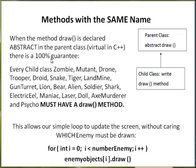Methods with the same name: when the method draw is declared abstract in the parent class, or virtual in C++, there is a 100% guarantee. Every child class — zombie, mutant, drone, trooper, droid, snake, tiger, landmine, gun turret, lion, bear, alien, soldier, shark, electric eel, maniac, laser, dog, axe murderer, and psycho — must have a draw method. All the parent has to do is declare it abstract, and every class that extends it must have that method.